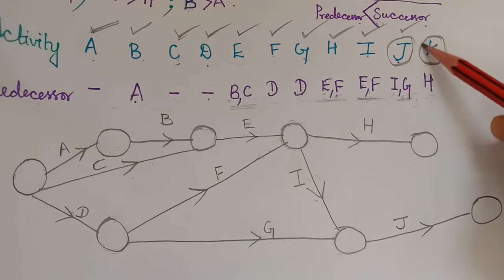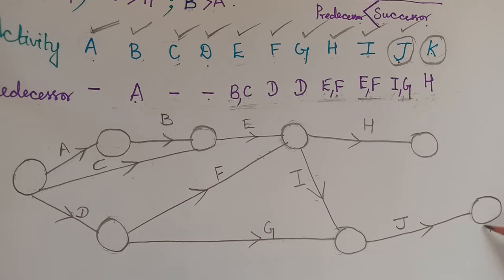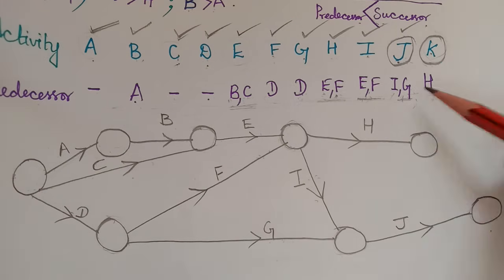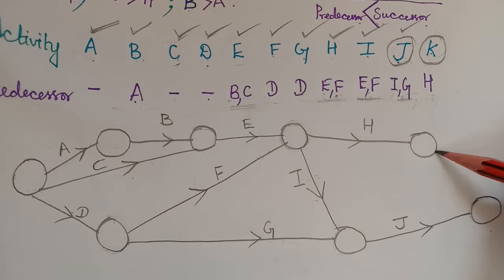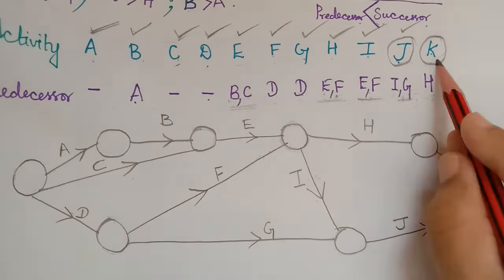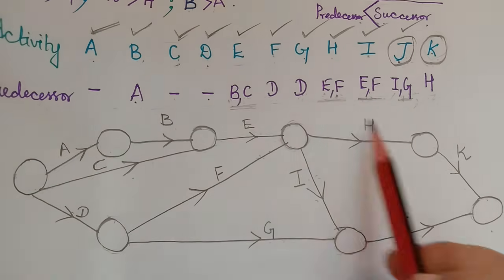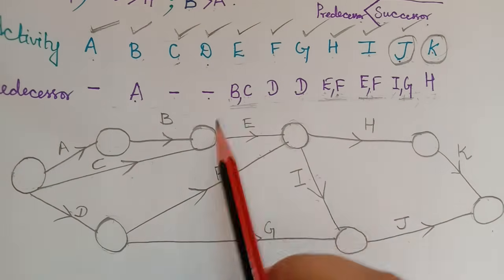Finally, activity K is also an end activity and must terminate at the same end node. The predecessor for K is H. So we draw activity K from H's end node to the final end node. J and K are the end activities, and all activities have now been drawn as per the given data.